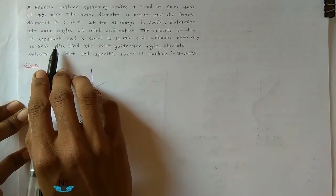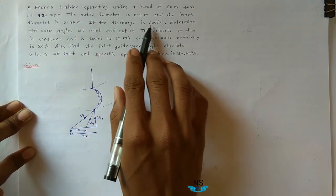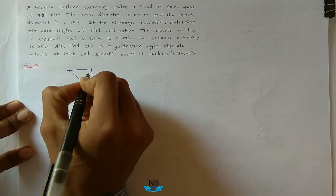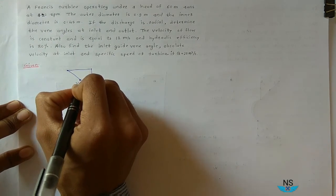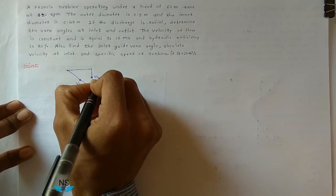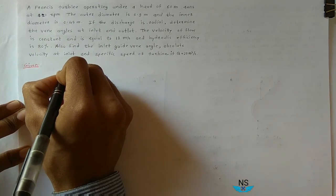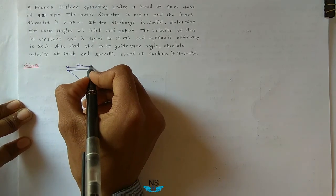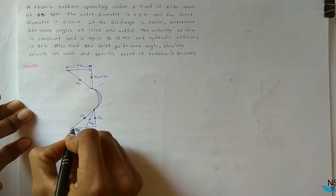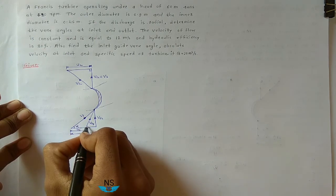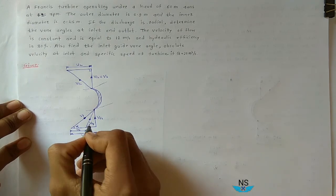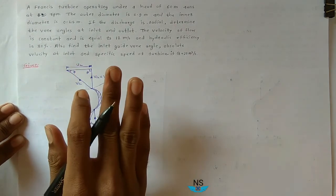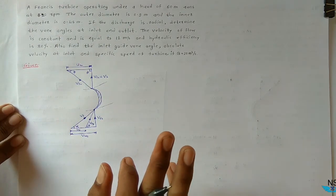Since the discharge is radial, beta is 90 degrees, so Vw2 is equal to zero. At the outlet triangle, Vr2, Vf2, and u2 are shown. Because discharge is radial, there is no whirl velocity at outlet, Vw2 equals zero. The guide vane angle at inlet is alpha, the vane angle at inlet is theta, the vane angle at outlet is phi, and this defines the inlet and outlet velocity triangles for a Francis turbine.